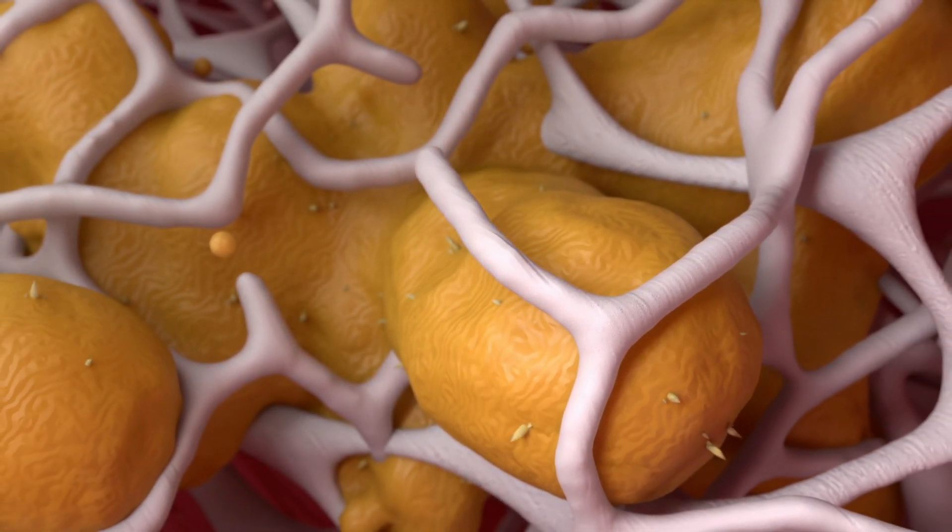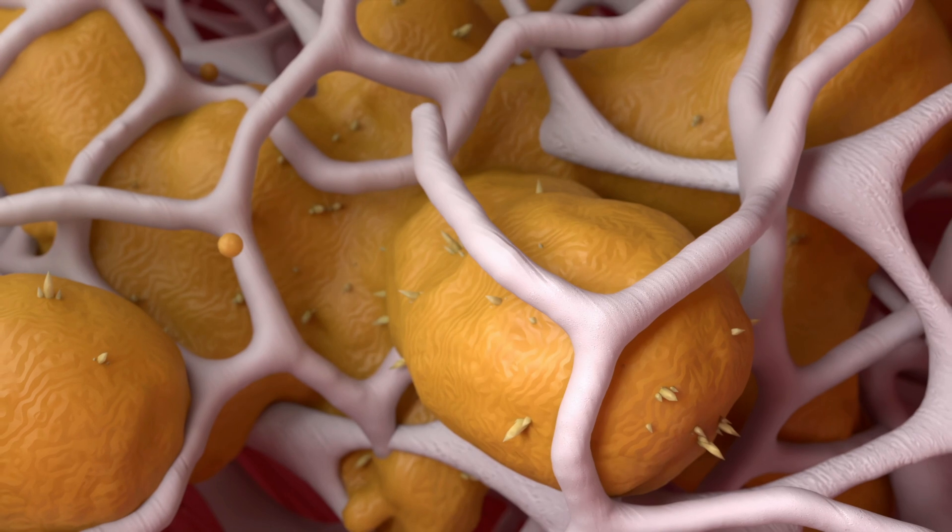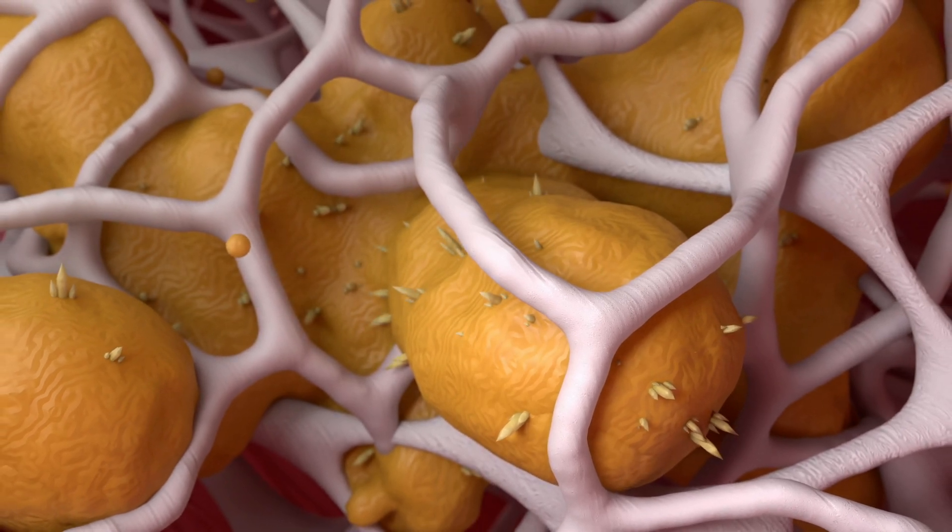Smooth muscle cells transform into fibroblasts and migrate to the top of the plaque, helping to stabilize its cap.